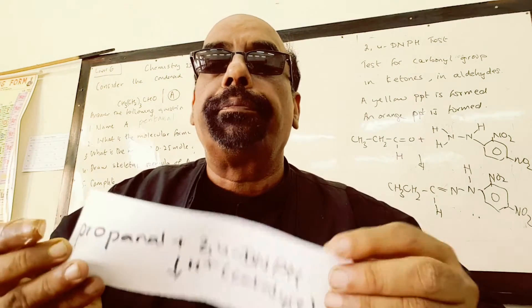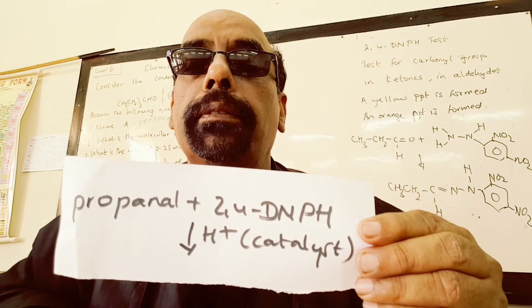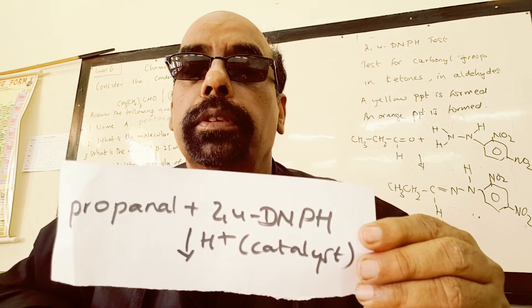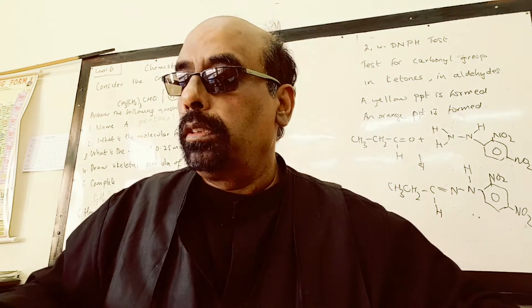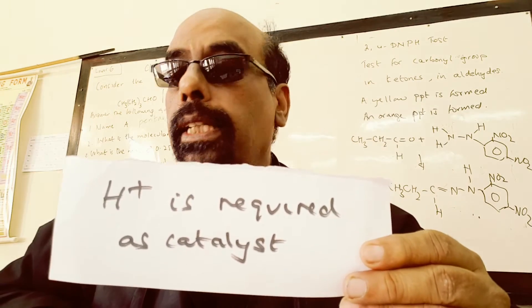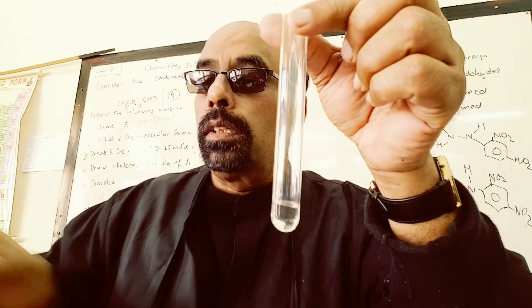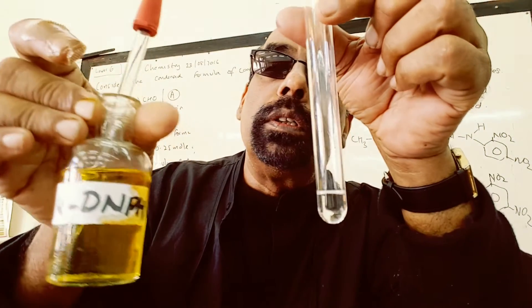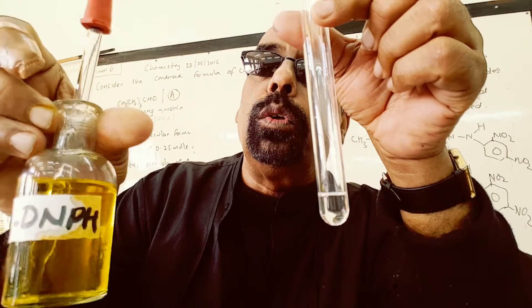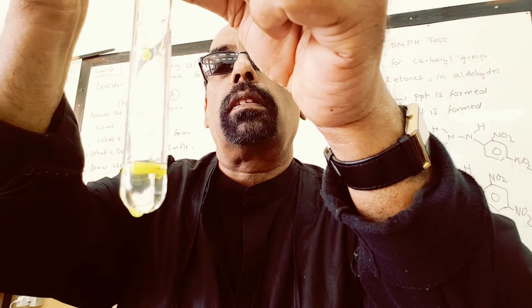When 2,4-DNPH is added to propanal, a yellow precipitate is formed. A small amount of acid is required as a catalyst. I have propanal here, and I add 2,4-dinitrophenylhydrazine. A yellow precipitate is obtained.